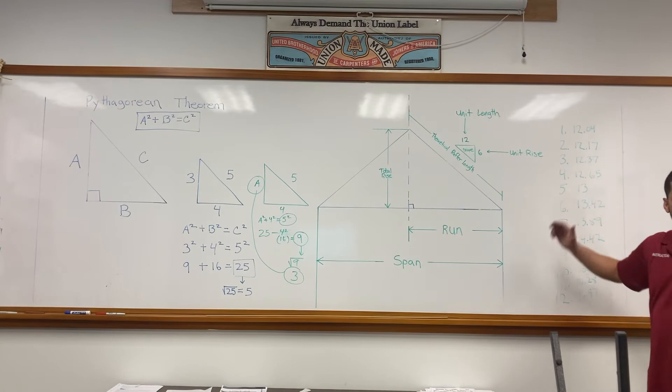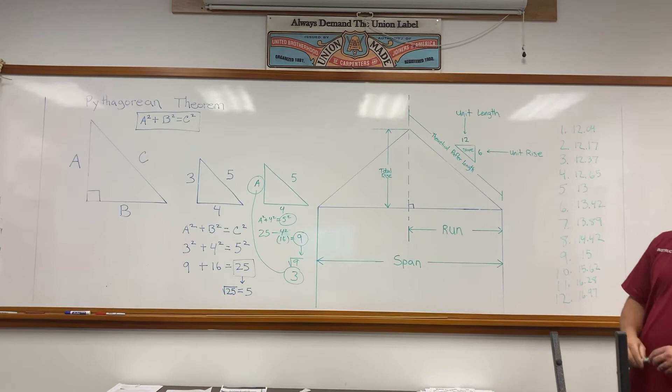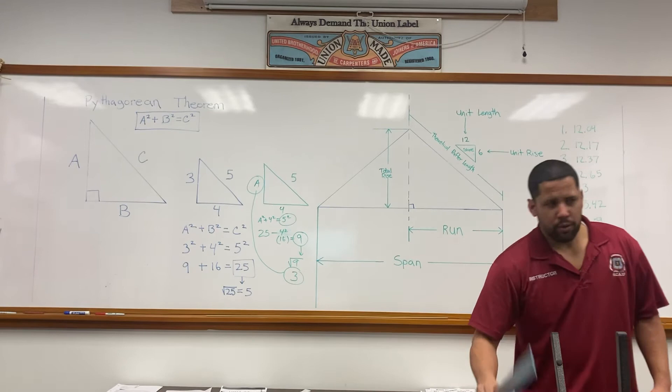The reason I had you calculate these particular right triangles from 1 through 12 is because these are the triangles we're going to use to calculate lengths of rafters.